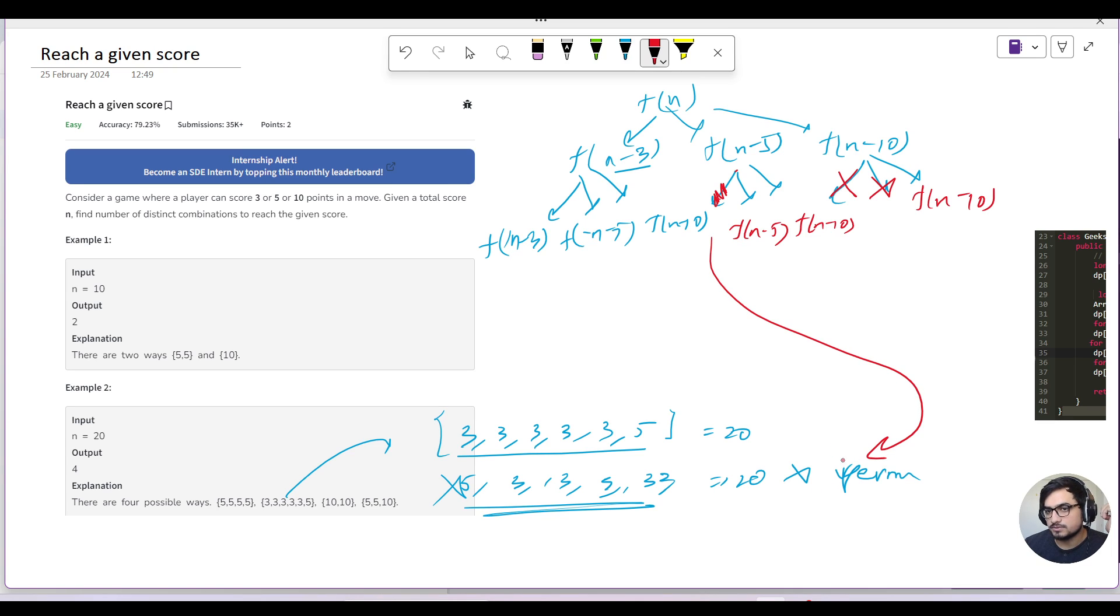Because otherwise, if n-3 calls n-5, and then n-5 calls n-3, in those cases, you will get occasions of permutation before moving. For example, I want 3 and 5 as my answer which sums up to 8, but I don't want 5 and 3 as my answer. So that is why, when n-3 is called, from that point onwards, all the moves should be of 3 only. Similarly, for 5, all moves should be 5 and 10. For 10, only 10.